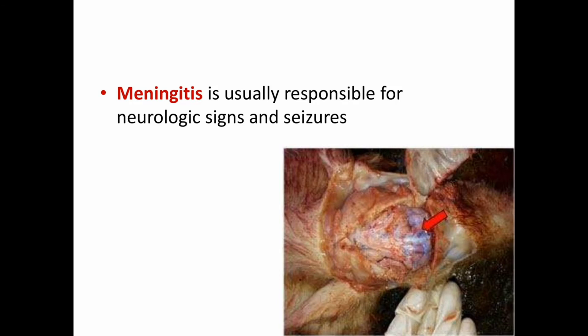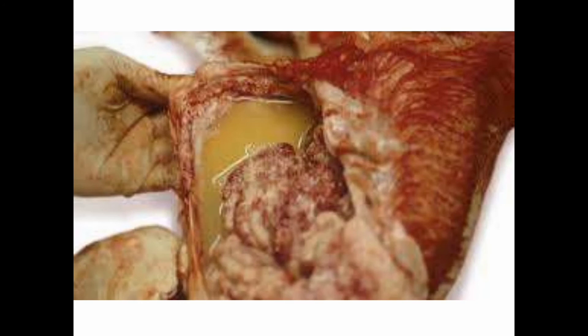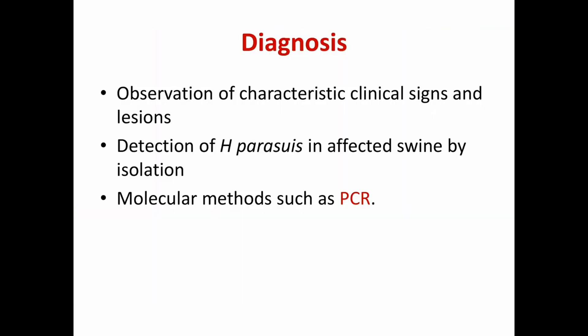Next is meningitis, which is usually responsible for neurologic signs and seizures. These post-mortem lesions are very important in the diagnosis of Glässer's disease. In per-acute disease, lesions are petechiae in some tissues with no gross lesions observed. Histologically, septicemia-like microscopic lesions such as disseminated intravascular coagulation (DIC), microhemorrhages, and increased fluid in the thoracic and abdominal cavities without fibrin are seen.